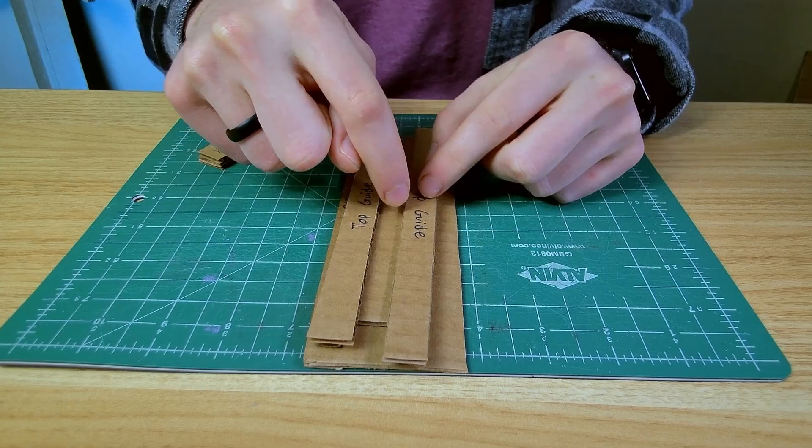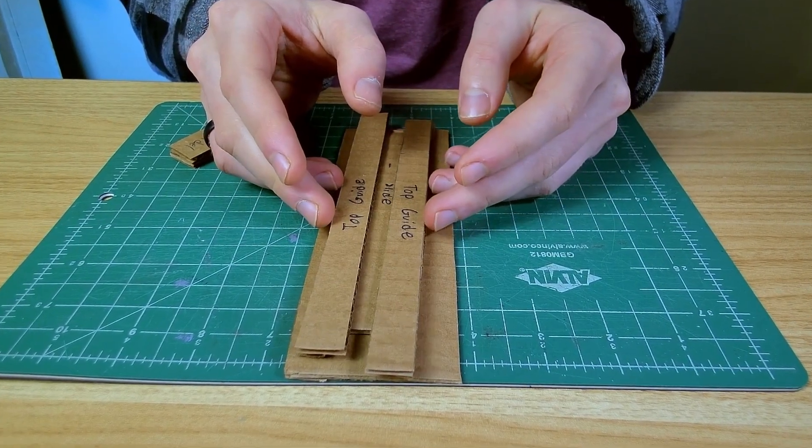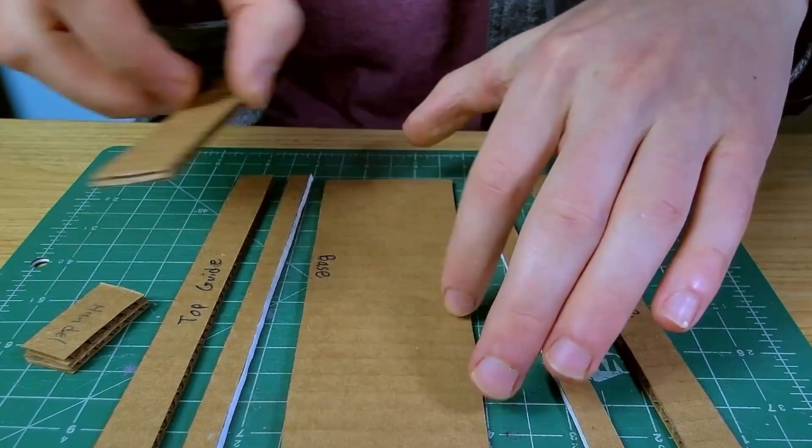If you made the slide in the center too thin, these top guides would have a hard time getting a good grip on it without coming super close together.